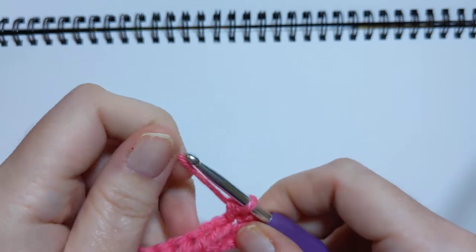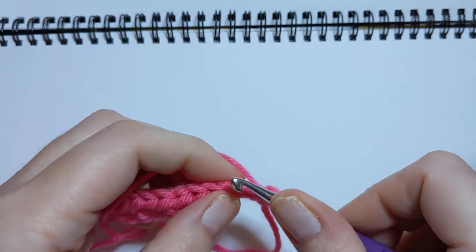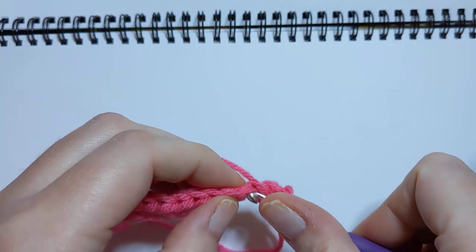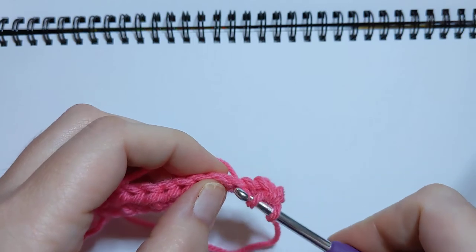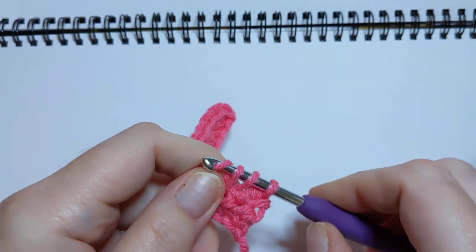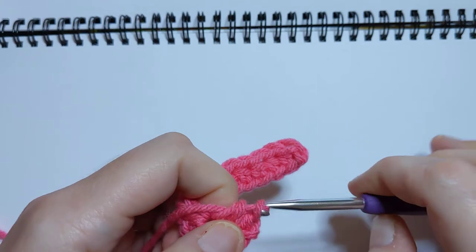We'll do it again, just a sort of a refresher: yarn over, pull, go through that stitch, pull up a loop, yarn over, and pull through all three that are on your hook.